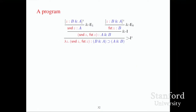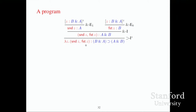Here's a simple program: lambda Z, (second of Z, first of Z). If Z is a B×A pair, then second of Z is an A and first of Z is a B, so the result is an A×B pair. It's the function that, given a pair, swaps its two elements. Assuming Z is a B×A pair, second of Z is A, first of Z is B, so (second of Z, first of Z) is an A×B pair, and lambda Z gives us a function from a B×A pair to an A×B pair.